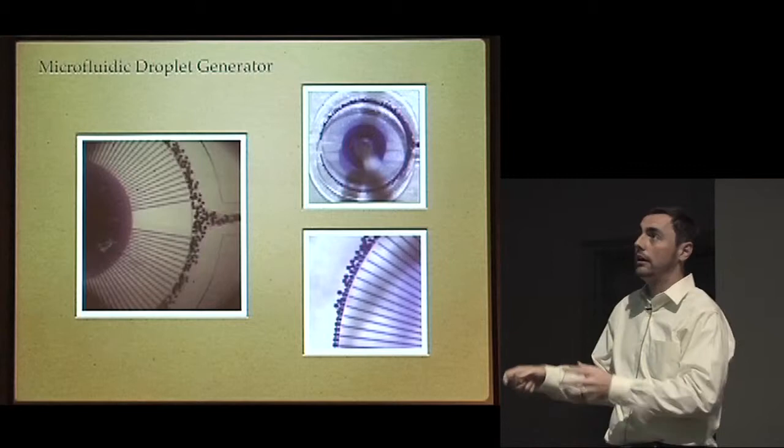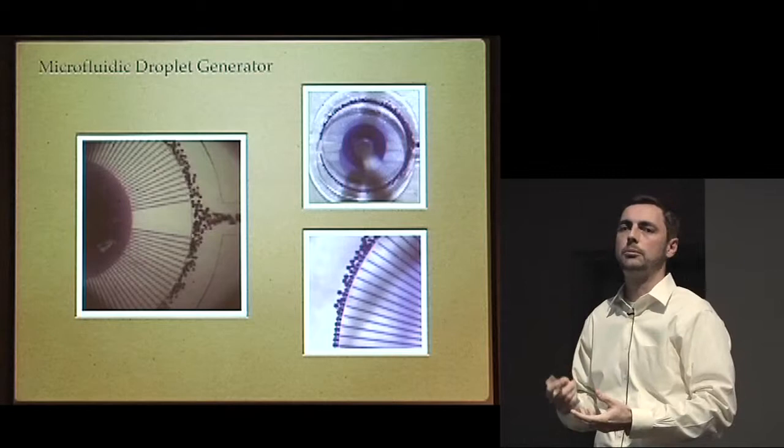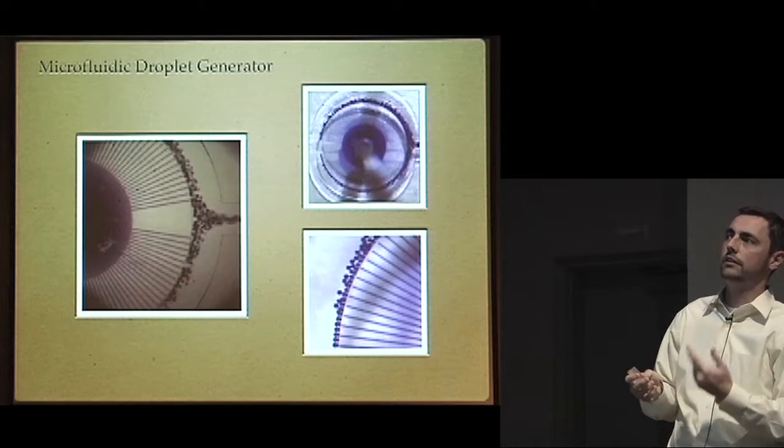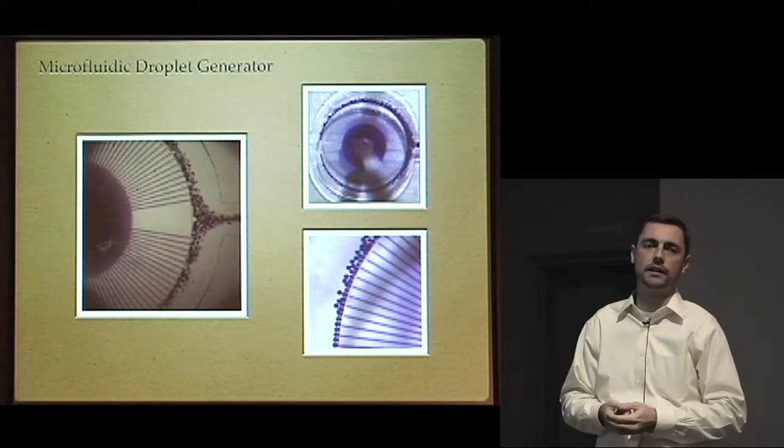So here are a couple more pictures of the circuit in action. And all you're seeing here is an aqueous solution that's been stained purple so that we can see it. And the oil flow coming around the outside in the annular channel, sweeping off these droplets as they're budding from the aqueous channels off to be collected.